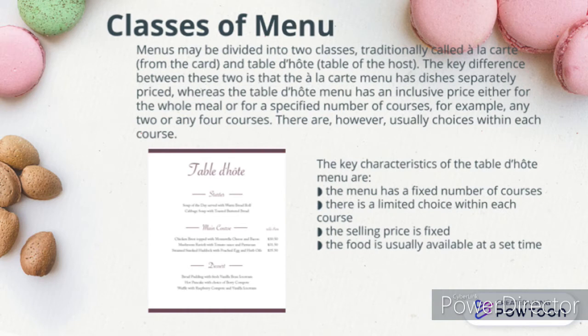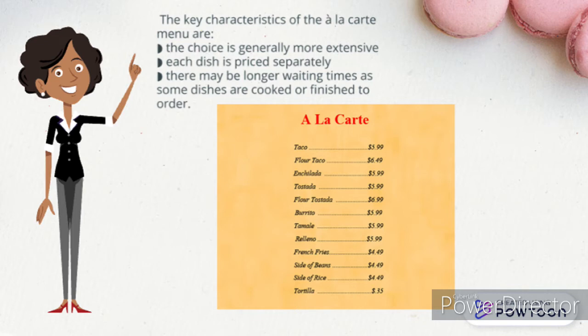The key characteristics of the table d'hôte menu are: a fixed number of courses, limited choice within each course, a fixed selling price, and food usually available at a set time. The key characteristics of the à la carte menu are: a more extensive choice, each dish separately priced, and there may be longer waiting times as some dishes are cooked or finished to order.